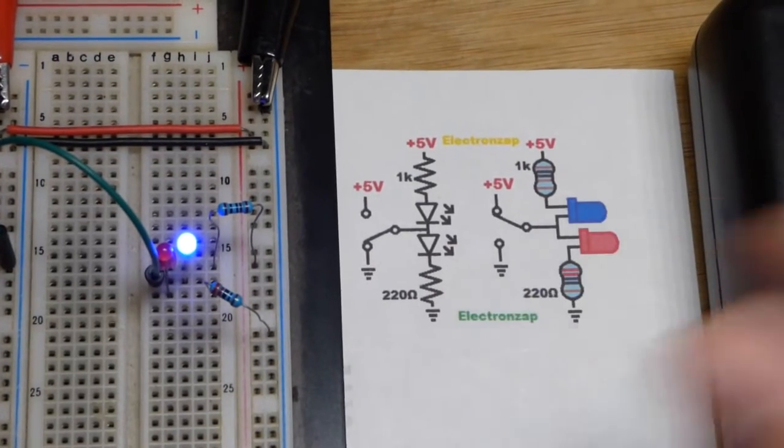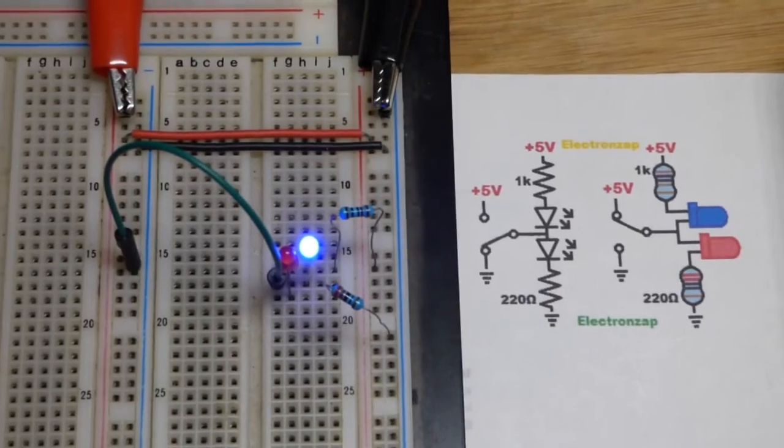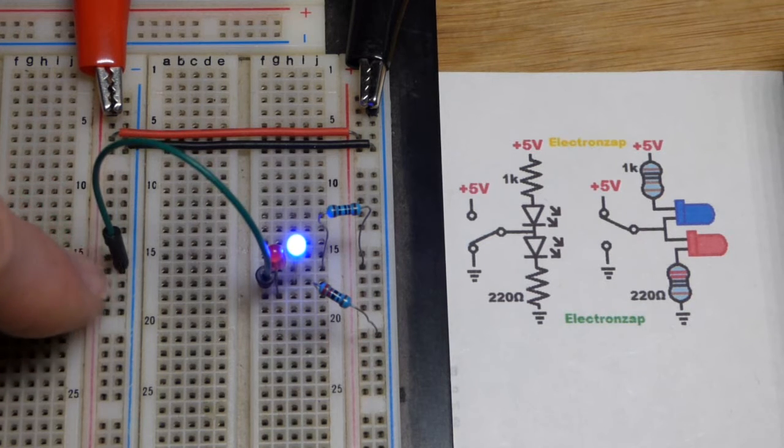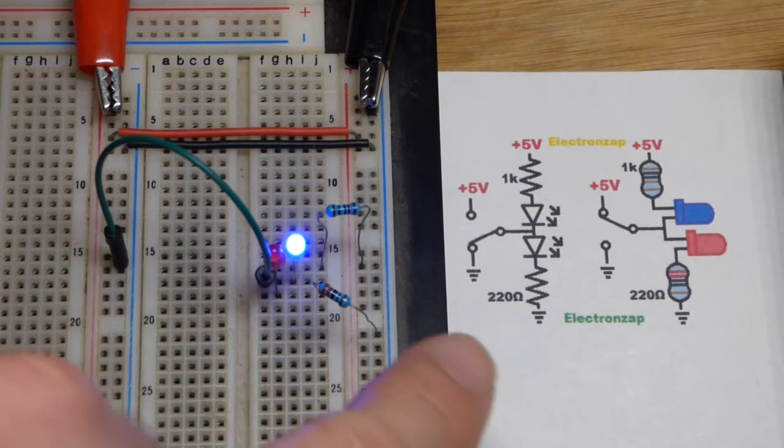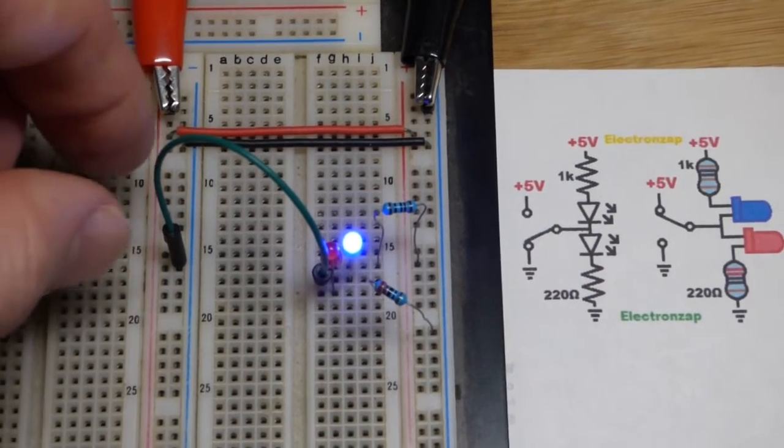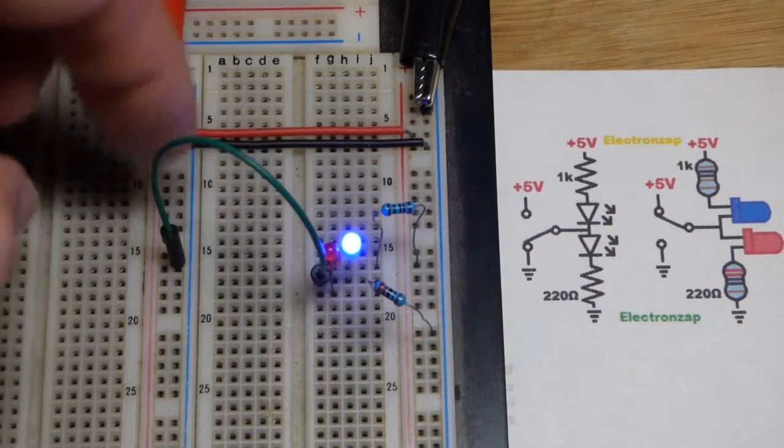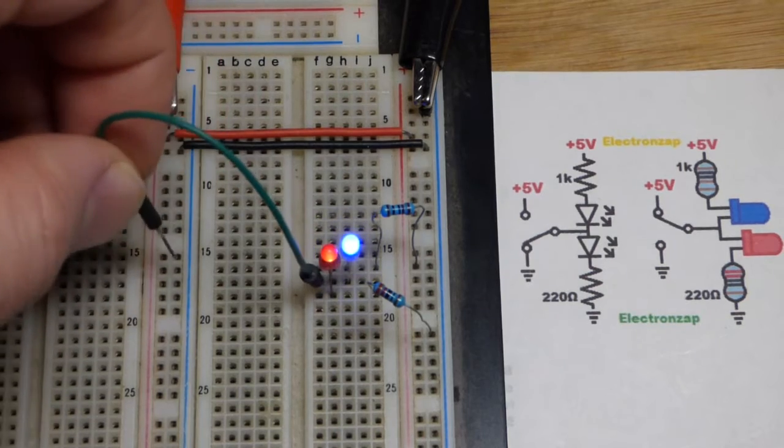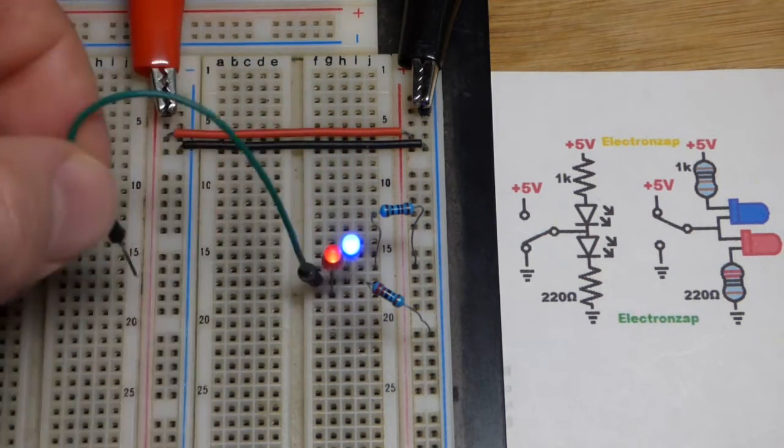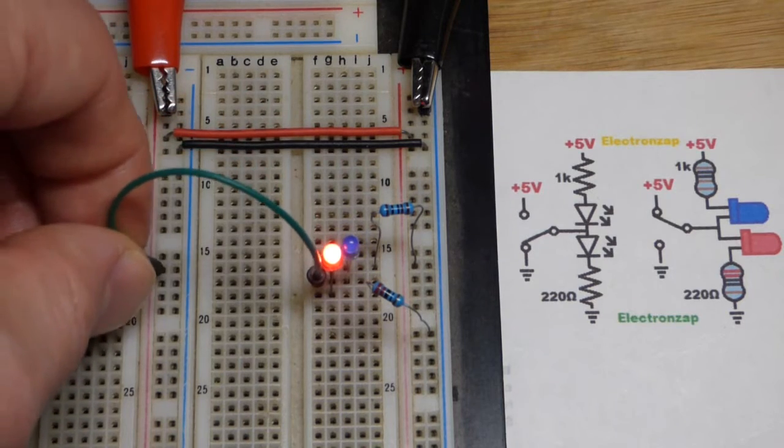There you can see not much current's going because we have that higher value resistor, 1000 ohm. I do this a lot with the 555 timers to show that the output is low - basically it's connected to ground. It's easier to visualize here than with the 555 timer or op amps or whatever else is outputting. Now again we aren't connected to anything, so we're going to go to the positive supply.